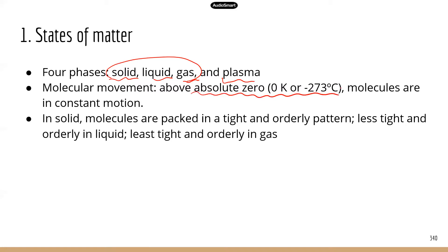One thing you need to know about molecules is that as long as the temperature is above absolute zero — negative 273 degrees Celsius — molecules are in constant motion. This provides the basis for why diffusion takes place, because molecules are constantly on the move. The collision between molecules creates this phenomenon known as diffusion. Molecules move from high concentration areas to lower concentration areas. So just keep in mind that molecules are in constant motion.